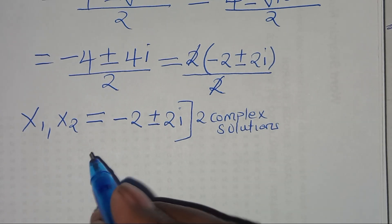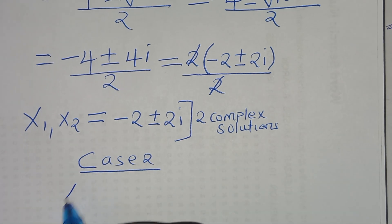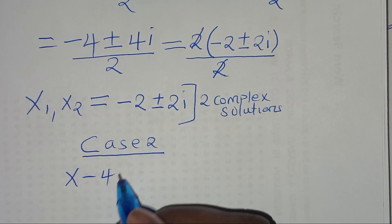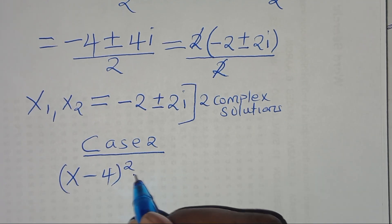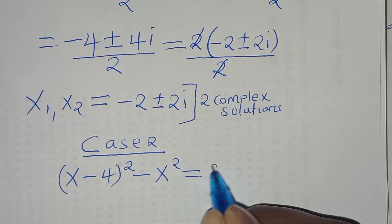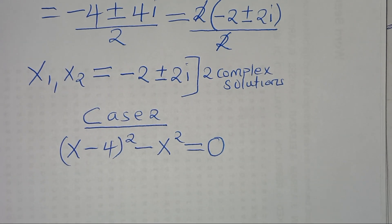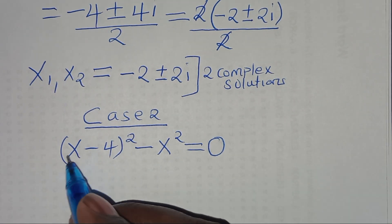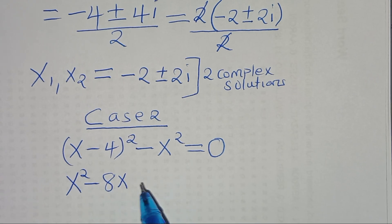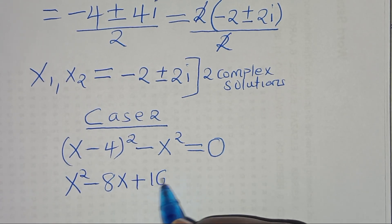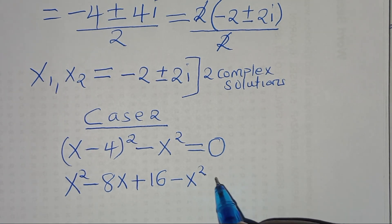Now for case 2: (x minus 4)² minus x² equals 0. Expanding (x minus 4)² gives x² minus 8x plus 16 minus x² equals 0.